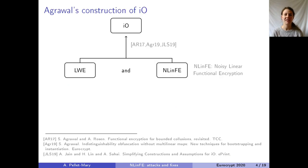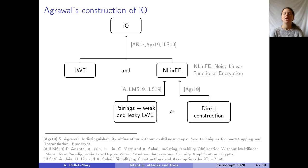More precisely, this is a construction from Shveta last year. She showed that if you have a primitive called noisy linear functional encryption with LWE, you can use that to construct indistinguishability obfuscation in a provable way. Together with this bootstrapping, she also proposed a direct construction of noisy linear FE, which is the one we're going to study in this talk.